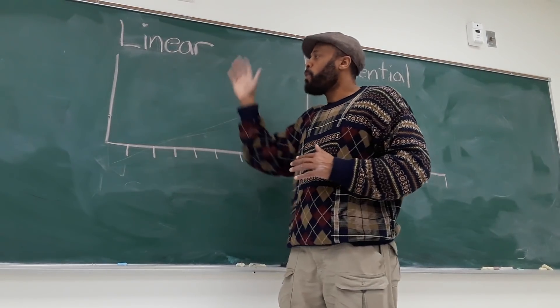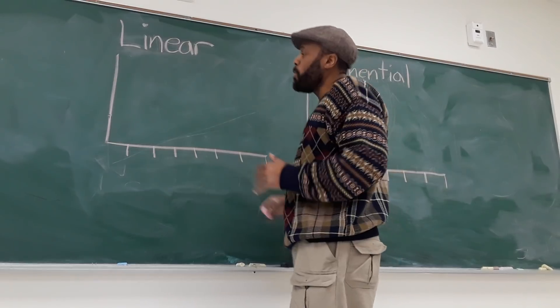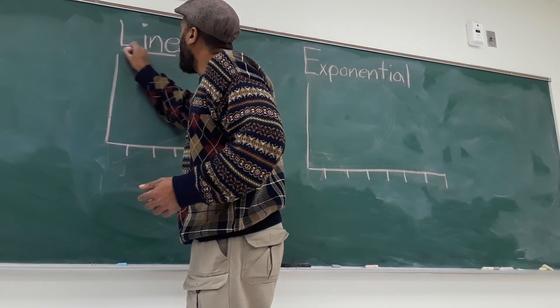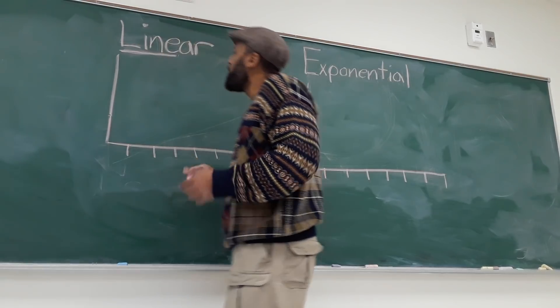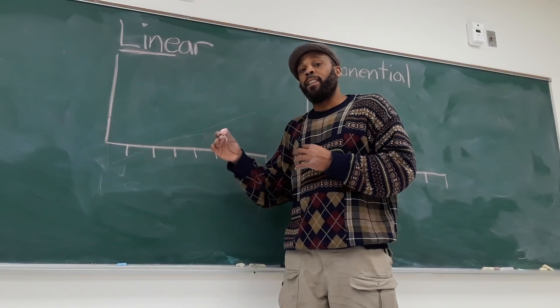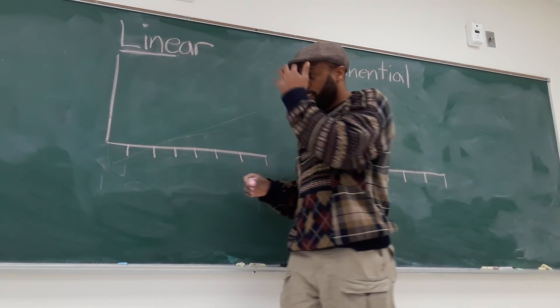So when you're thinking about a linear growth model, one of the things that you'll notice in the word linear is you have the word line. So linear growth happens in a straight line. It happens in a constant, predictable way.